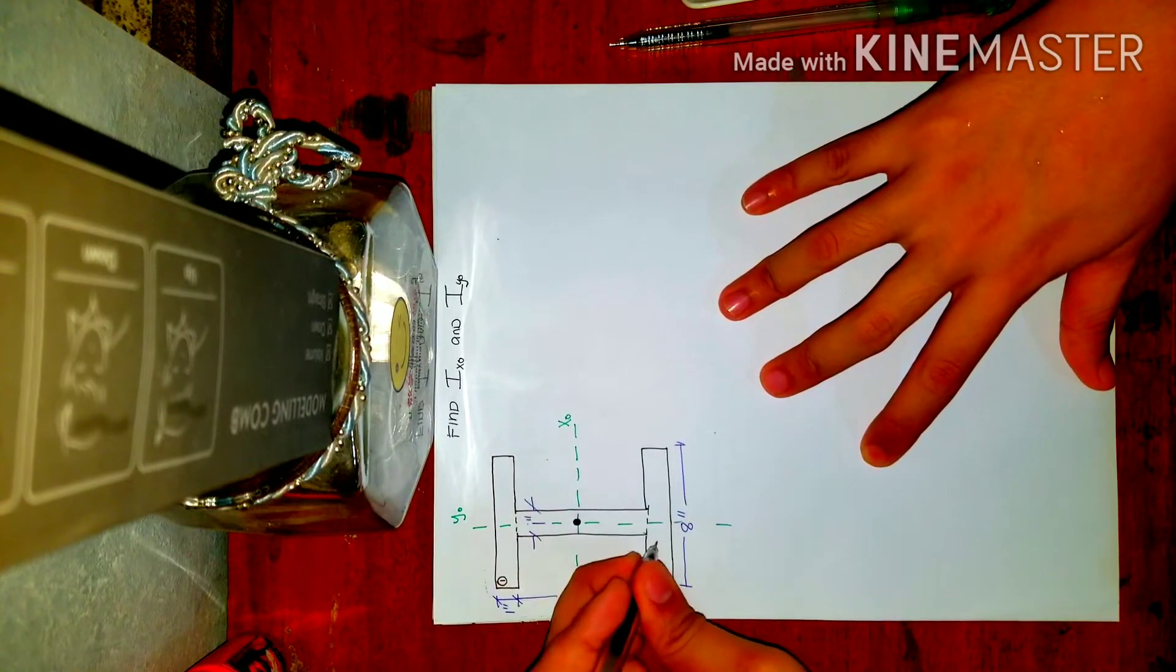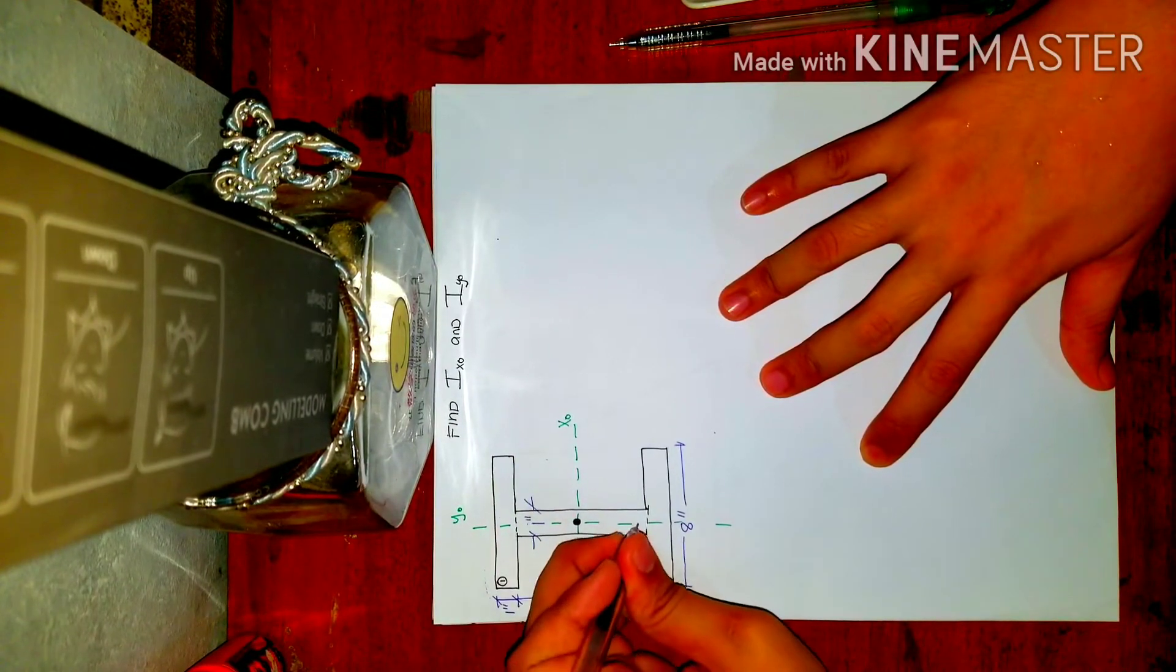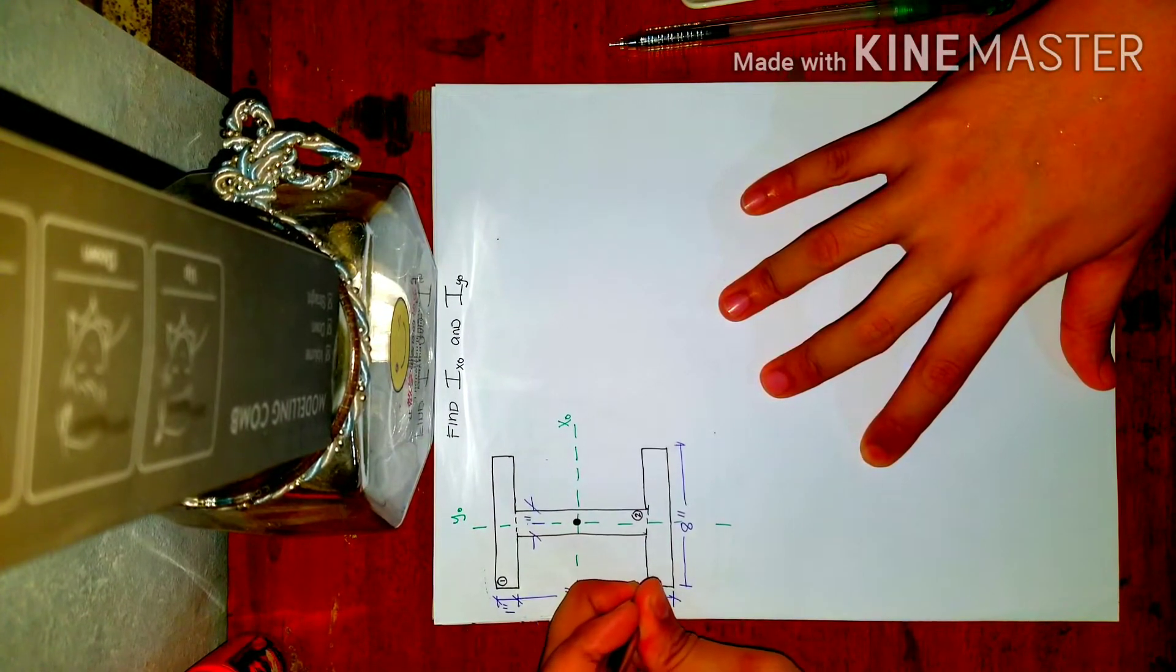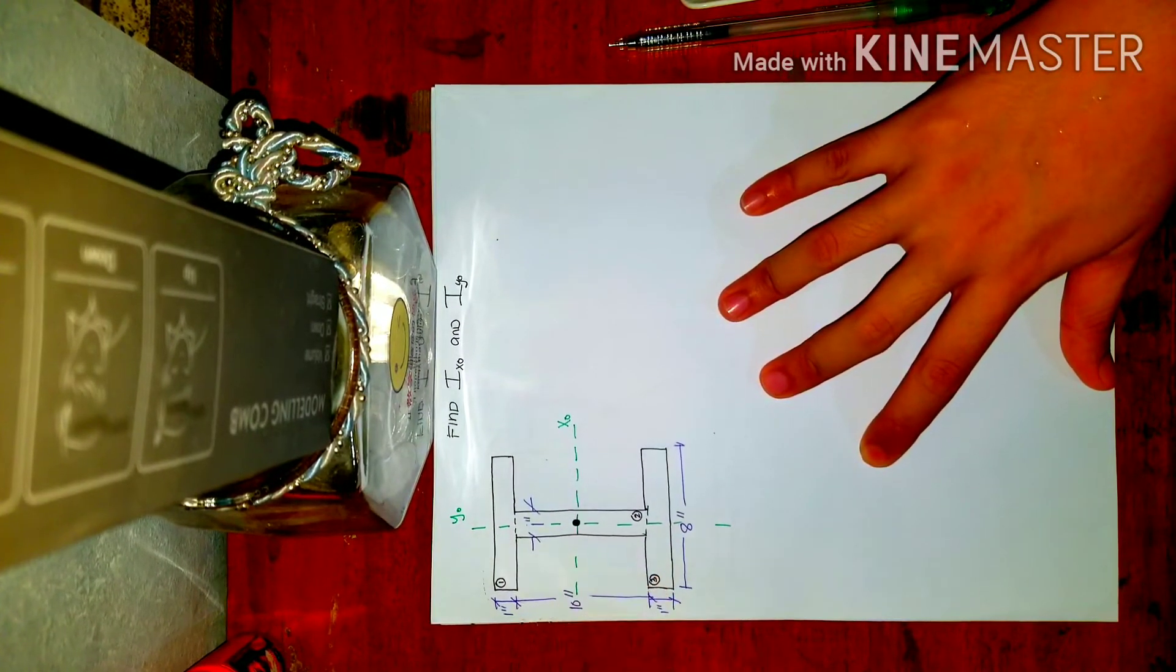So the second rectangle is this web. And the third one.